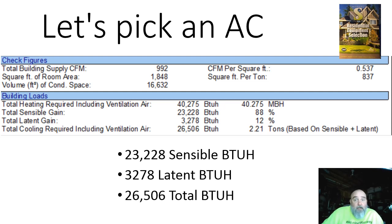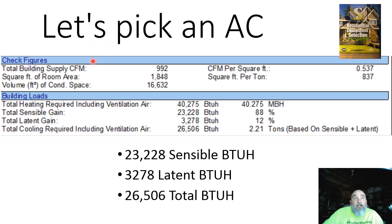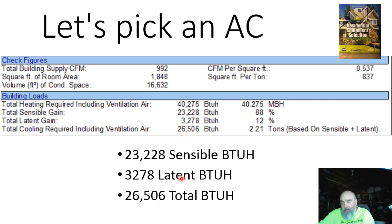As the slide on the screen says — I'm trying to find the laser pointer, there we go — we're going to pick an air conditioner. We did a load calculation: this is our sensible gain, this is our latent gain, this is our total gain, and this is our heat loss up here. Right now we're selecting an air conditioner, so there is our gain.